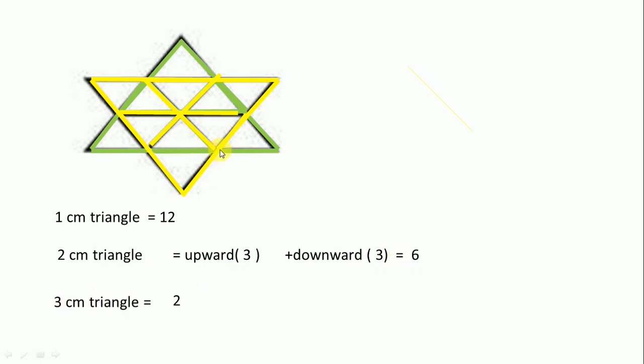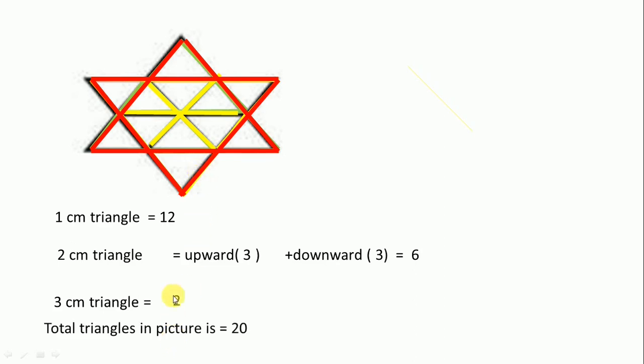Now we see 3 cm triangles. This is 1 and this one is 2. 3 cm triangle is 2. So total number of triangles is 12 plus 6 is 18, 18 plus 2 is 20.